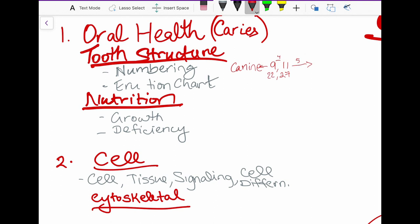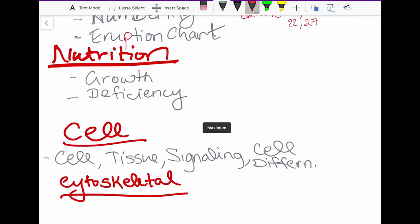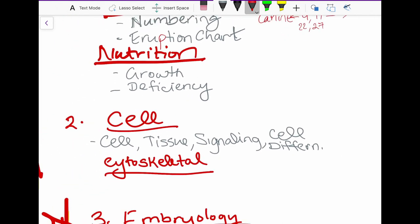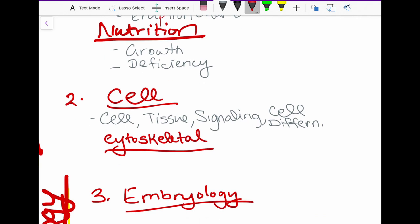After that, we will do the eruption chart, and I will post a separate video on all the tricks to remember the eruption chart. Don't worry, it's just simple formula or simple drawings. So you don't have to worry about the eruption chart. Next comes growth and deficiencies. So it's just human growth and what causes nutritional deficiencies, which nutritional deficiencies cause certain types of abnormalities or dental anomalies, or caries, simplistically.